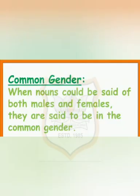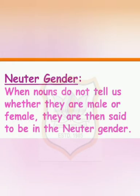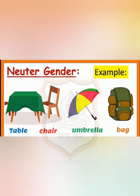When nouns could be said of both males and females, they are said to be in the common gender — for example, teacher, student, baby, doctor. When nouns do not tell us whether they are male or female, they are said to be in the neuter gender — for example, table, chair, umbrella, bag.